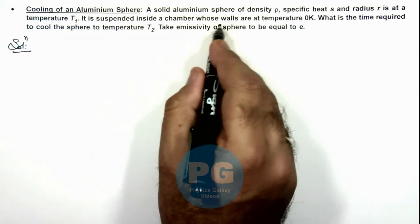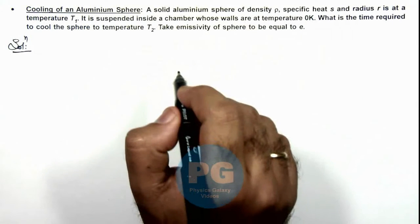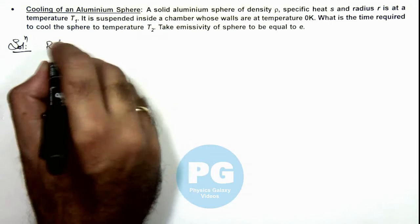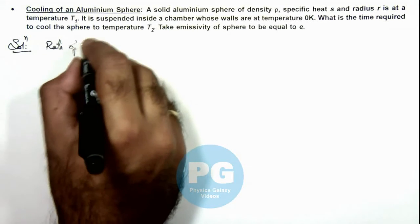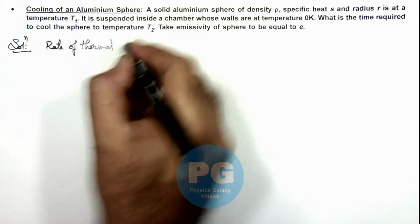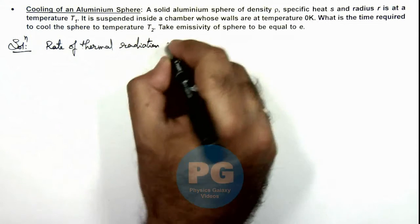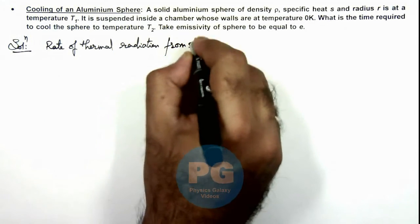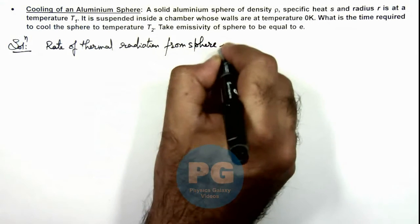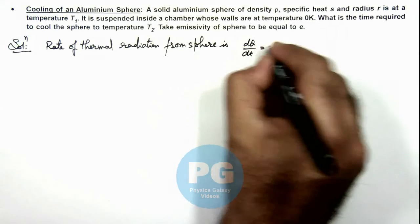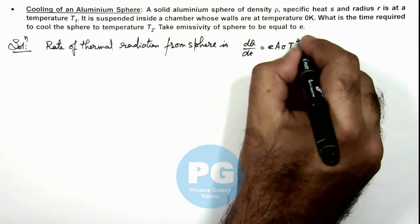As the temperature of walls are at zero kelvin, we can calculate directly the rate of thermal radiation from the sphere. This we can write as dQ/dt, and it is equal to eAσT to power 4.